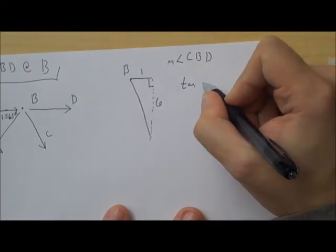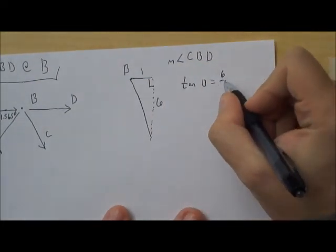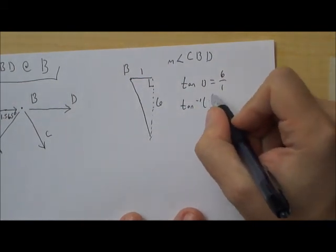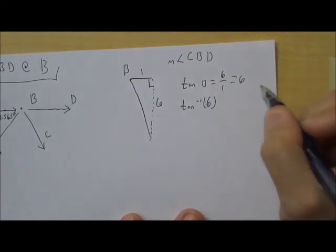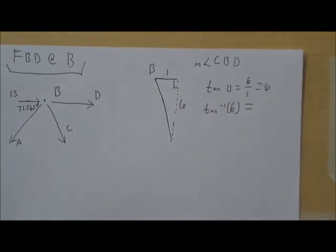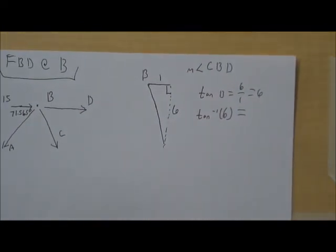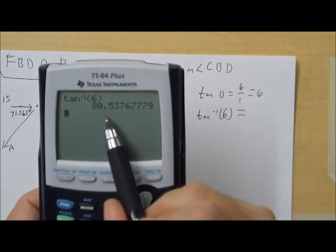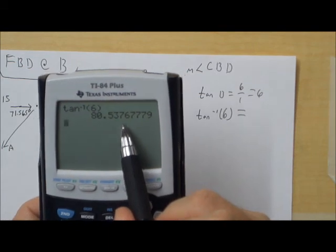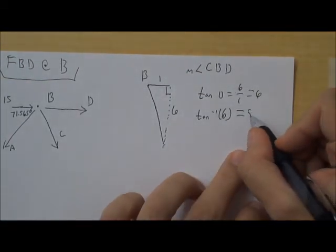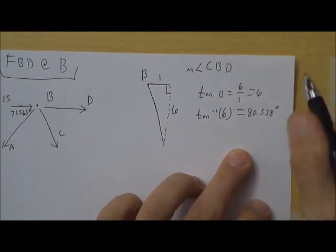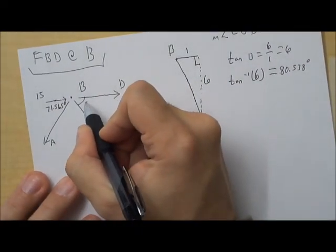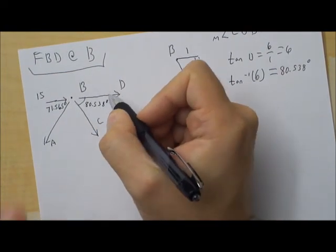The tangent of angle B is opposite over adjacent, 6 over 1. So we're going to do inverse tangent, tangent to the negative first of 6 since that's what that equals. And it's going to give us our angle. So inverse tangent of 6 and we get 80.538 degrees. Alright, and so we'll label that in here.